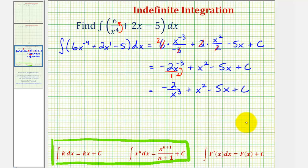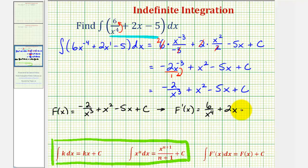A lot of times we use big F of x for the anti-derivative function. So we can say big F of x, our anti-derivative, is negative two over x to the third plus x squared minus five x plus c. Remember what this means is, if we find the derivative of big F of x, this will be equal to the original integrand of six divided by x to the fourth plus two x minus five.